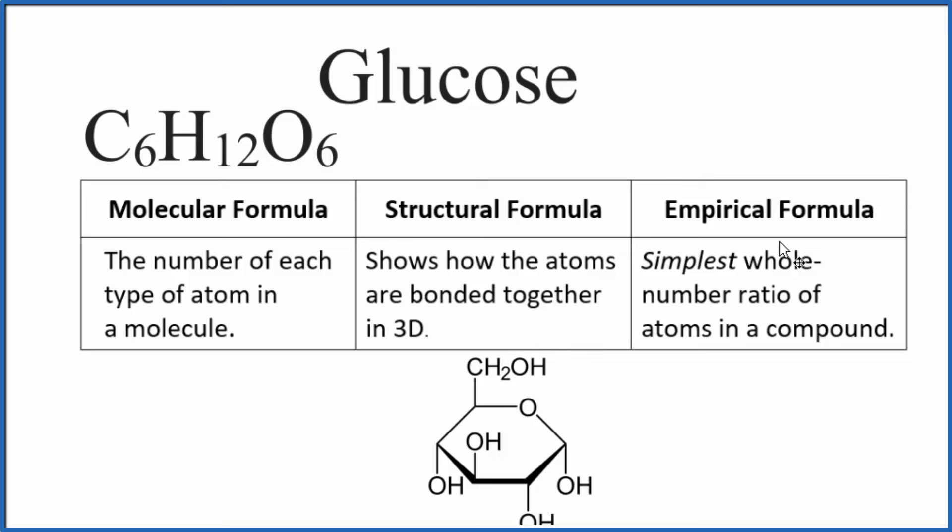The empirical formula though, how do we write the empirical formula for glucose? We want the simplest whole number ratio. It looks like six is the smallest number here. Let's divide each one of these by six.